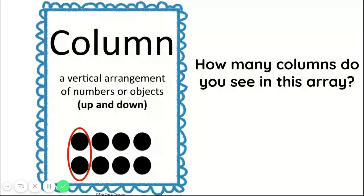We also have columns in arrays. Columns are vertical arrangements of numbers or objects — these go up and down. How many columns do you see in this array? There are four columns in this array. The first one is circled in red, and you can see it's going up and down. Remember, columns go up and down, and rows go across side to side.